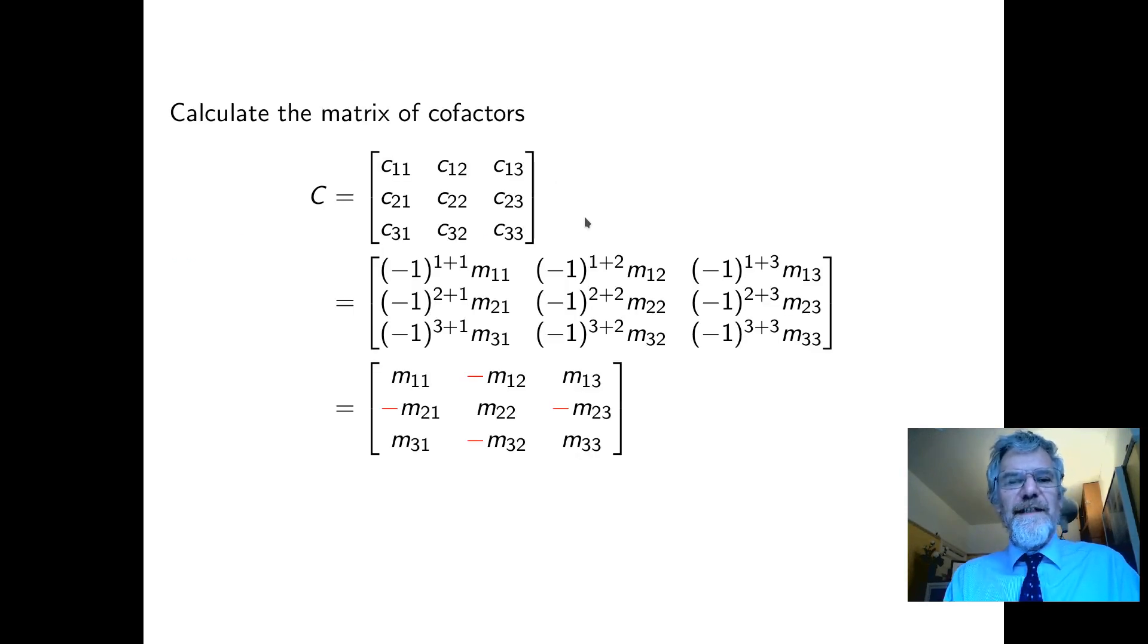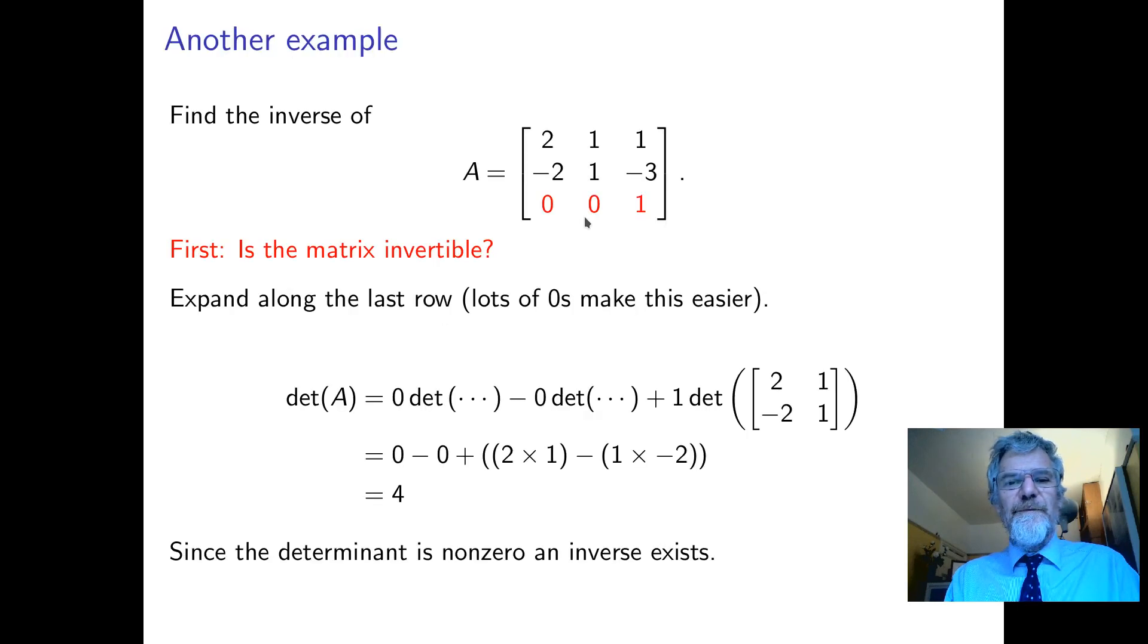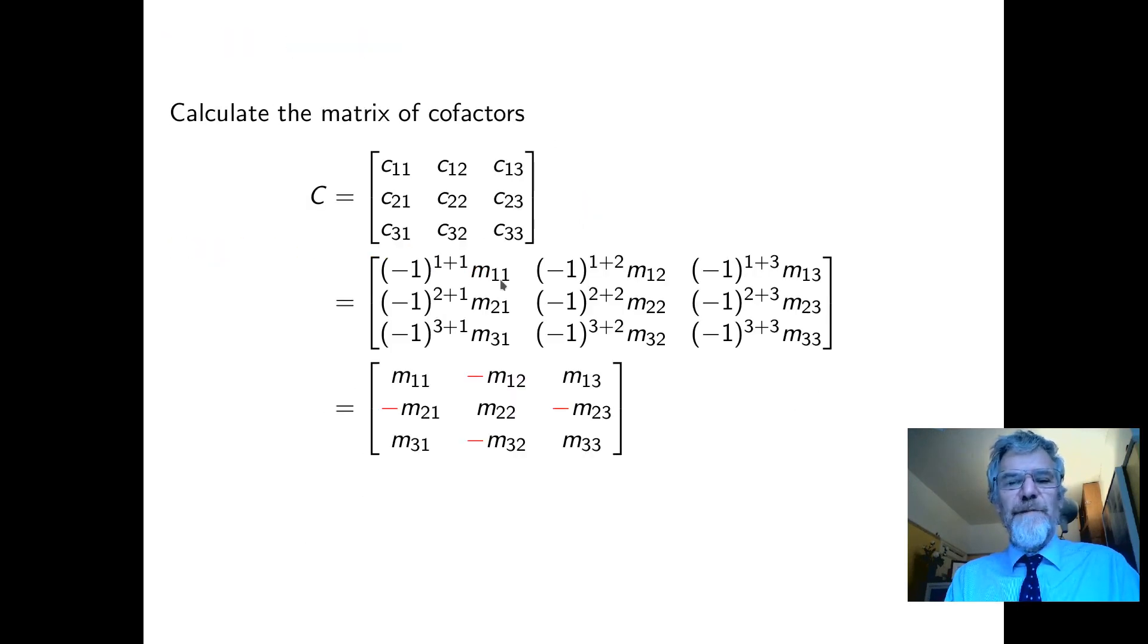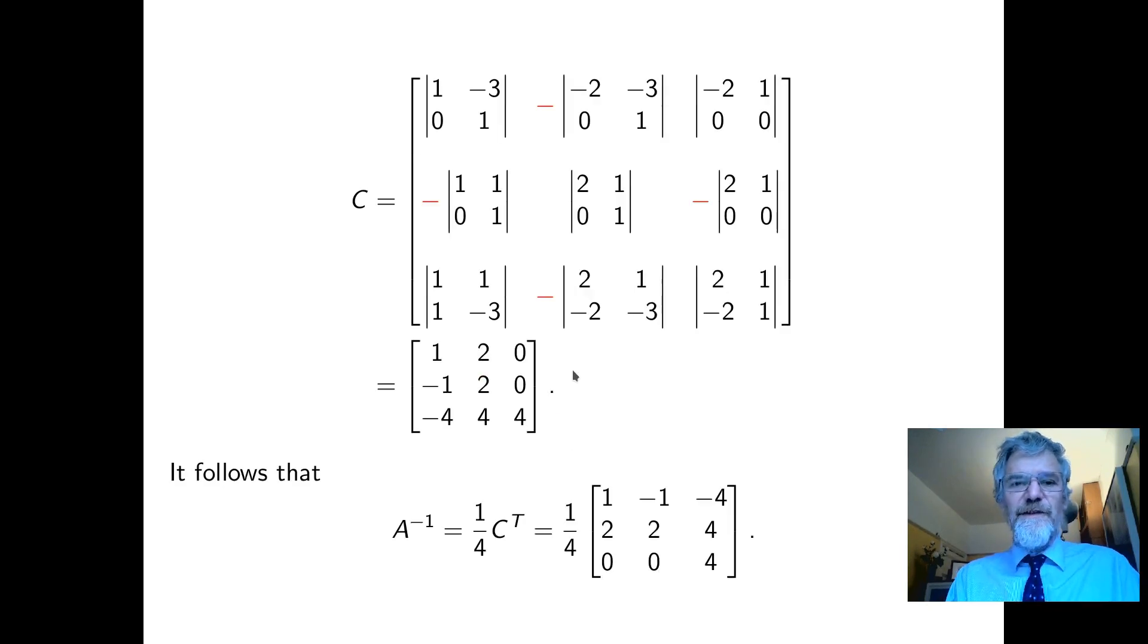So let's calculate some cofactors. So the cofactors are plus and minus the minors and notice it goes plus minus plus minus plus minus and so on. So these minors we get by crossing out the corresponding row and column and working out a 2 by 2 determinant. So I'm laying it out like this that the matrix we get by crossing out the first row and first column is this one, one minus three zero one and so on.